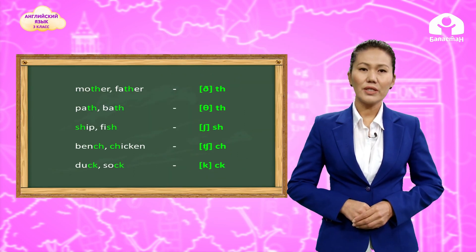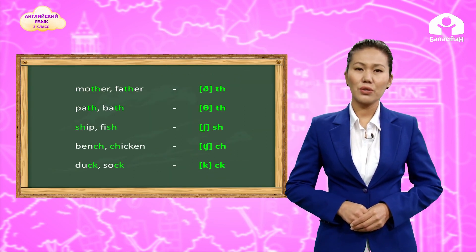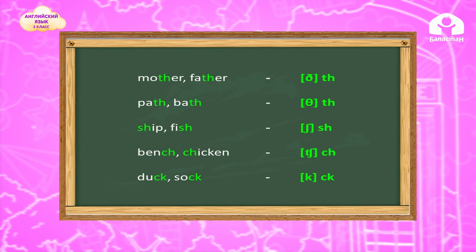Now read the words together: mother, brother, pass, bus, shell, ship, bench, chicken, duck, sock.